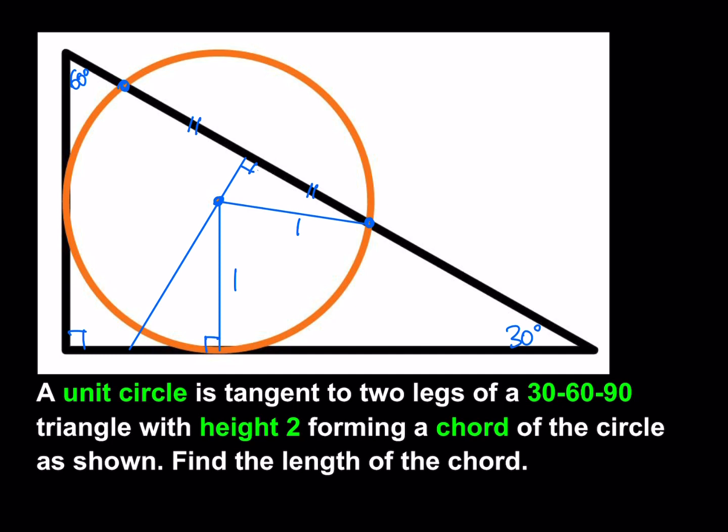These connections are important because we're going to use the properties of 30-60-90 triangles as well as the Pythagorean theorem. Since that angle is 30 degrees, this should be a 60-degree angle. Now, this particular right triangle formed here is not a 30-60-90 triangle — we don't know that.